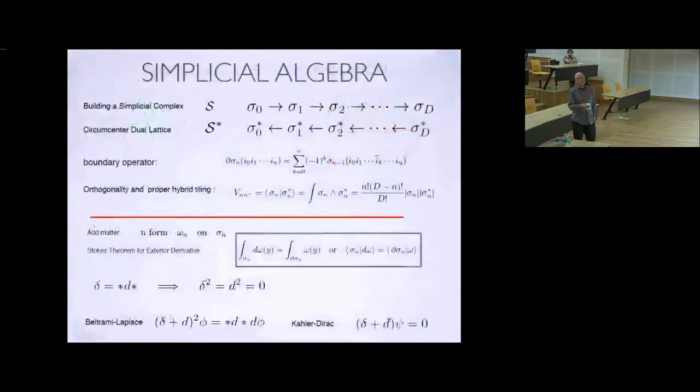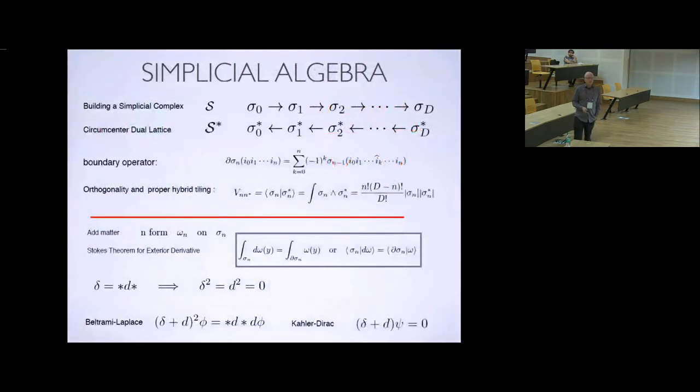So that's the Laplacian. This is just basically maybe for your amusement. So this is a general thing. You start with points, lines, triangles, and so on. Then the dual lattice is constructed by taking the centers of the lines, and then the centers of the triangles, and then the centers of the tetrahedrons.